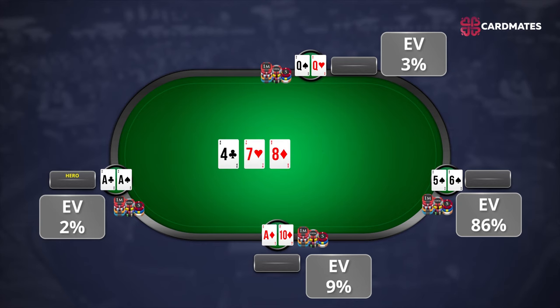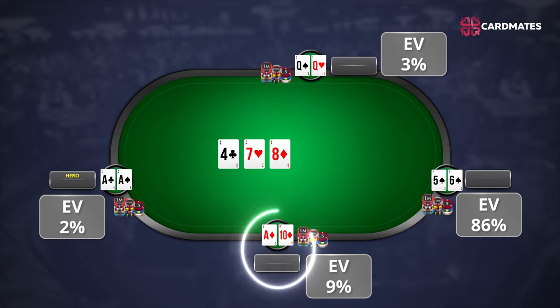We see the following flop: 4 of clubs, 7 of hearts, and 8 of diamonds. The 5-6 of spades made a straight, and this hand now has 86% probability to win. Your pocket aces have dropped to 2% to win. Pocket queens now have only 3% to win. Ace-10 of diamonds has 9%, because there's a chance for a runner-runner flush or a straight.